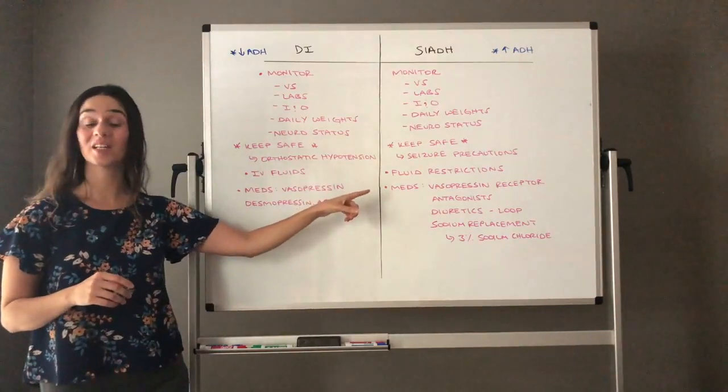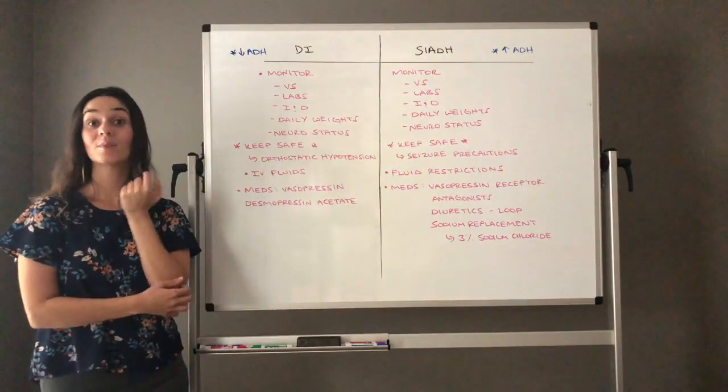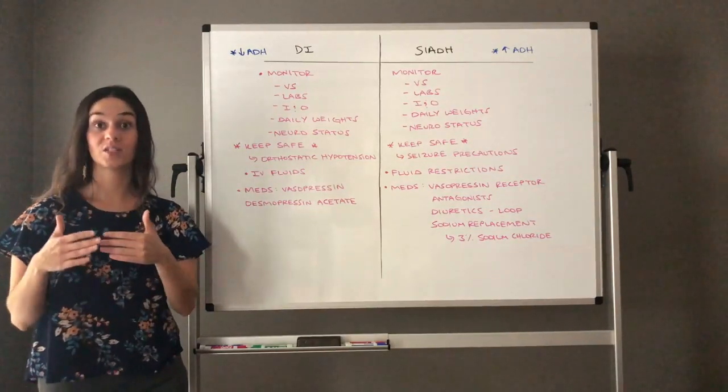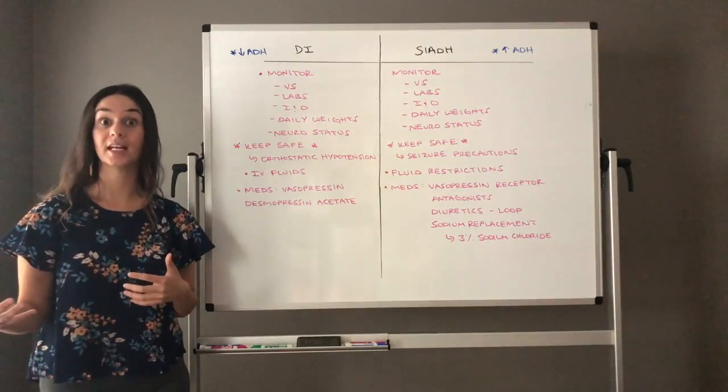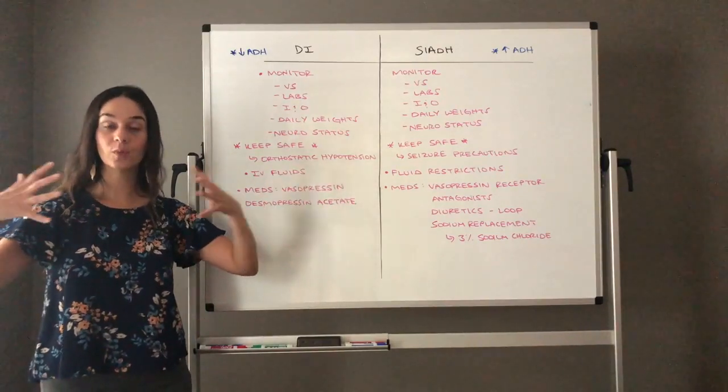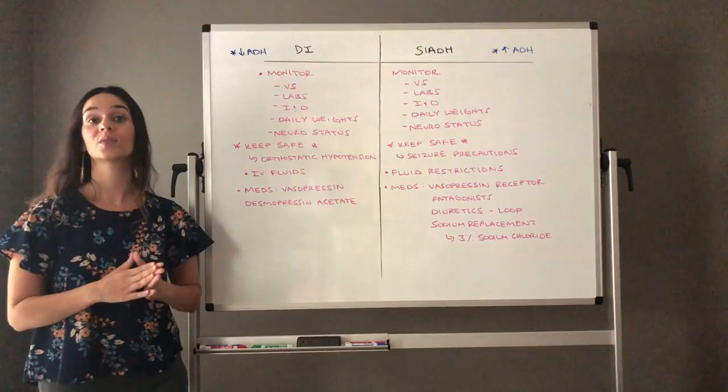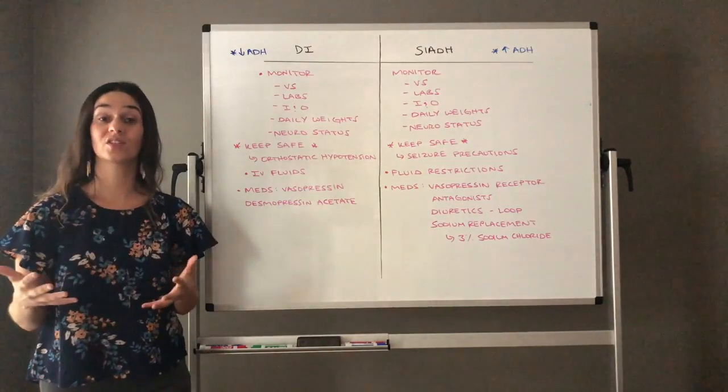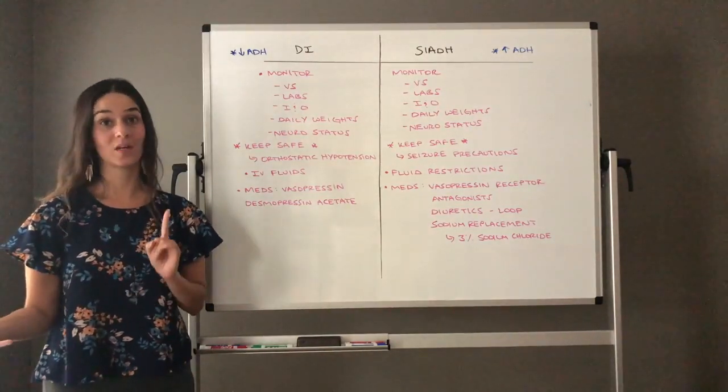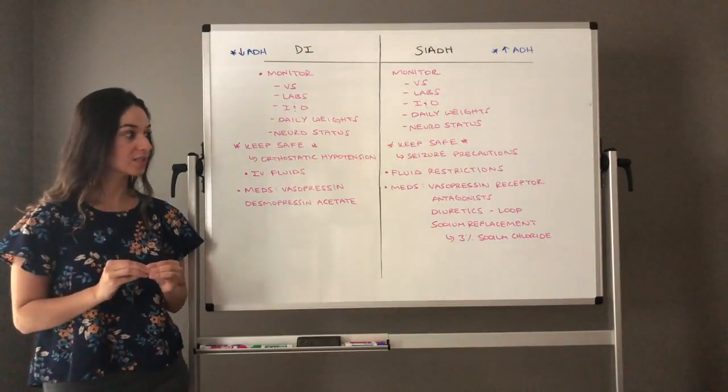And let's talk about a fluid volume overload client. It makes a lot of sense that we place them on fluid restrictions. Typically, we always encourage clients to be drinking two to three liters of water per day. That's not appropriate for this client. They already have too much water that's diluting all their particles. They can be placed on fluid restrictions. They can be on a fluid restriction of less than a thousand mLs in one day. So we could place them on fluid restrictions.